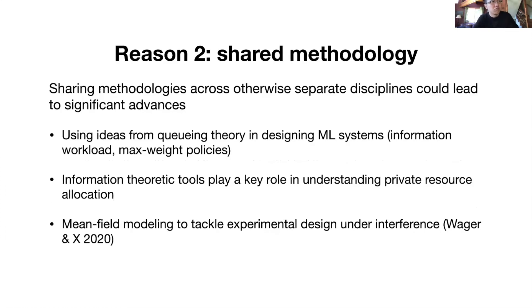Therefore, in that system it will be very fruitful to think about how to generate predictions along with how to use such predictions for decision-making in the subsequent steps. Reason number two, I would say, is on the methodological end. Namely, in fact, if sharing methodologies across these otherwise separate areas could lead to significant advances. Here's some early evidence. For instance, in our own work, we have been able to use ideas on queueing theory in designing machine learning algorithms, for instance the information workload idea in the information processing system. Also, it's very easy to see that a few very important information theoretic tools such as Fano's inequality can play a very central role in understanding private resource allocation. Finally, in some recent work I did with my colleague Stefan Wager, we were using mean field models, which is a staple of performance analysis and queueing theory, to tackle experimental design problems under interference. I think the list can go on where such methodologies from one field can really make an impact in different fields, and considering these topics together might make these cross fertilization more easily spotted.